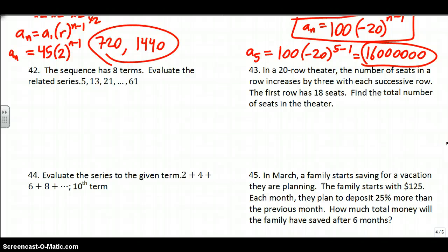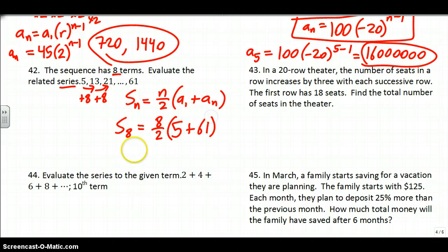Sequence has eight terms. Evaluate the related series: 5, 13, 21, 61. Clearly arithmetic - we're adding eight every time. Arithmetic series is N over 2 times the first term plus the last term. These might be some important formulas to have on your note card. Eight terms, so I plug in eight for N. The first number in the series is five, the last number is 61. Then it's just a matter of four times 66, which is 264. That would be the total if you actually added them all up.